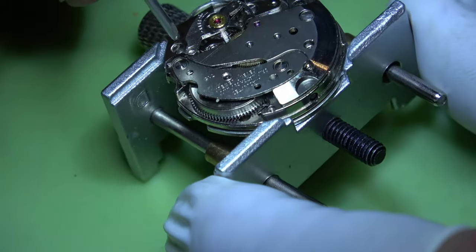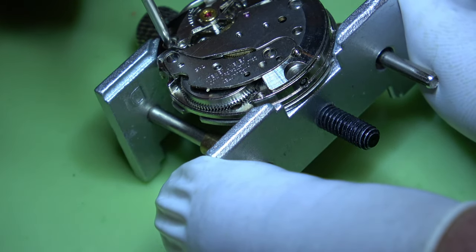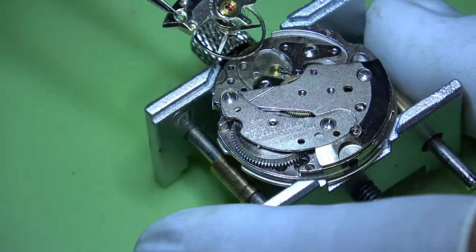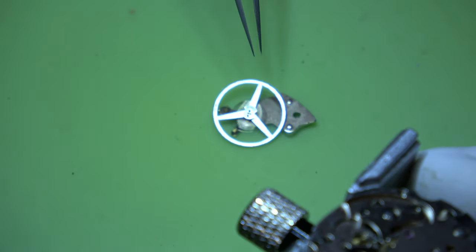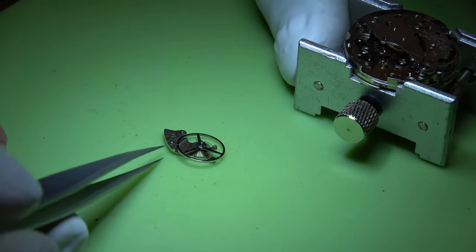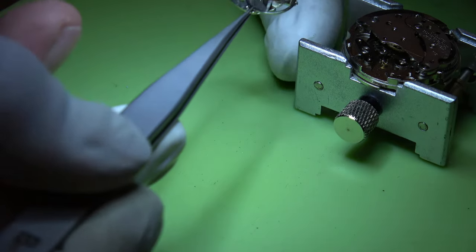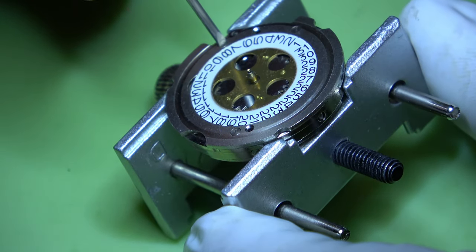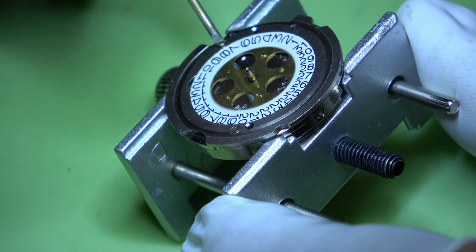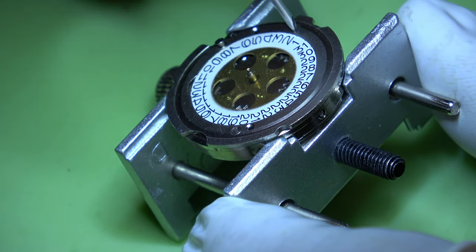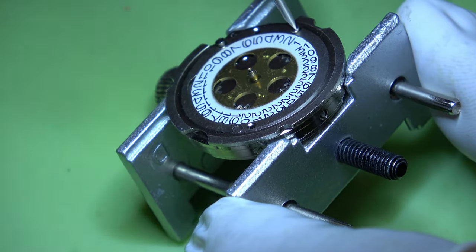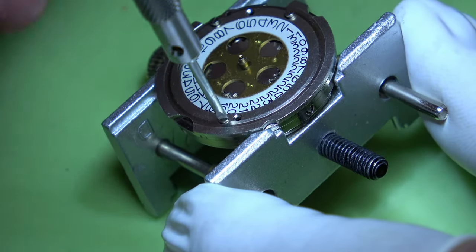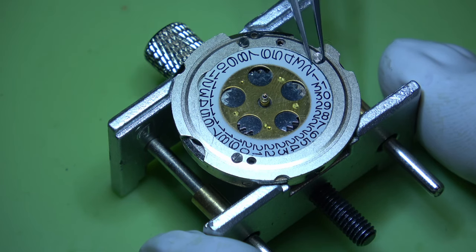Get it into the movement holder. We'll do the usual, take out the balance and the most fragile parts of the watch. That spring looks in good shape as well. I'm going to take this retaining ring off for the date wheel.